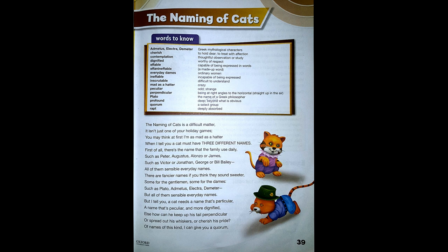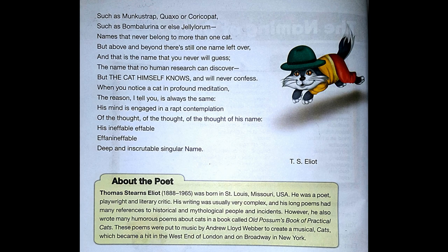Demeter. But all of them sensible everyday names. But I tell you a cat needs a name that's particular, a name that's peculiar and more dignified. Else how can he keep up his tail perpendicular, or spread out his whiskers, or cherish his pride? Of names of this kind I can give you a quorum, such as Munkustrap, Quaxo or Coricopat,